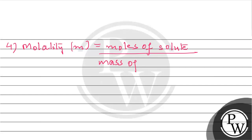Now the fourth one we have is molality, and we denote it as small m. If we see its formula, that will be moles of solute divided by the mass of the solvent in kilograms.